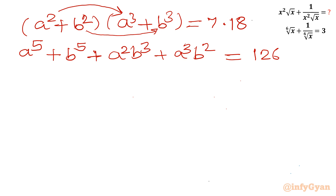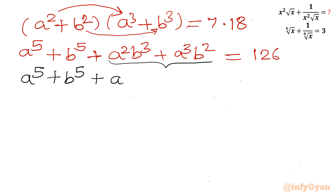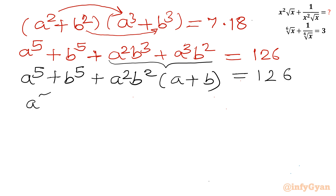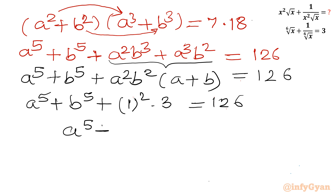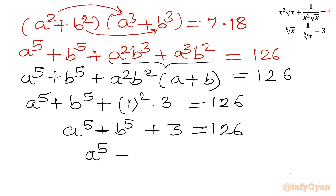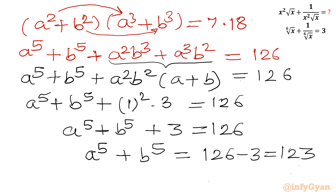Taking a²b² common from the cross terms: a²b² = (ab)² = 1² = 1, and (a + b) = 3. So a⁵ + b⁵ + 1 × 3 = 126, giving a⁵ + b⁵ + 3 = 126. Taking 3 from both sides: a⁵ + b⁵ = 123.